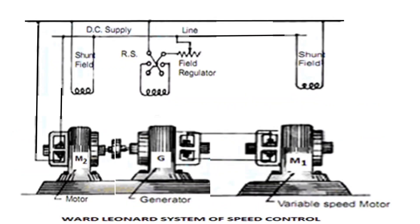According to this diagram, a generator is driven using the DC motor M2, and the supply from the generator is given to the DC motor M1, which is the motor to be controlled. A field regulator is provided so that the speed from the generator supply can be varied, and in this manner, the speed of motor M1 can be varied according to the requirement.